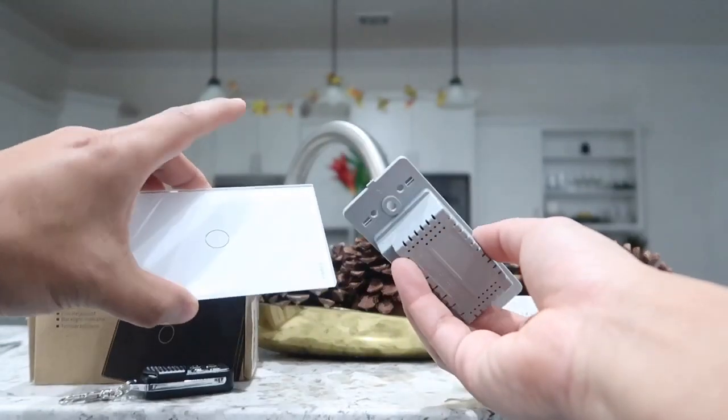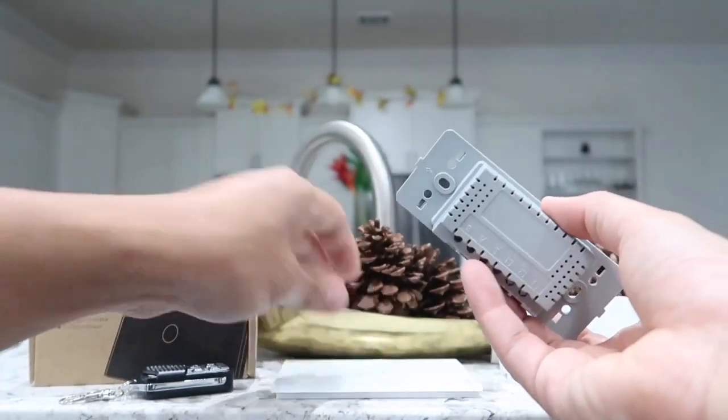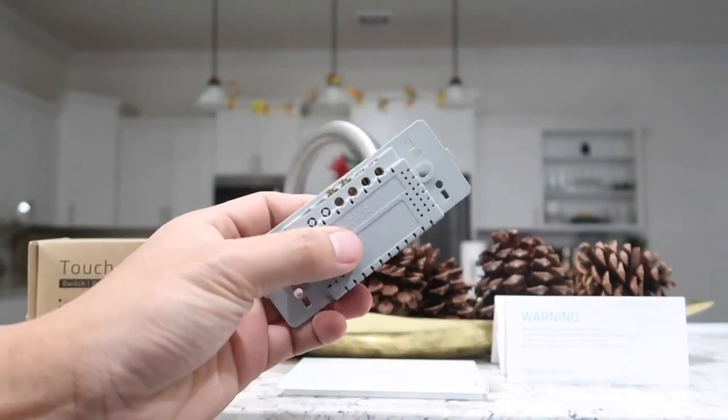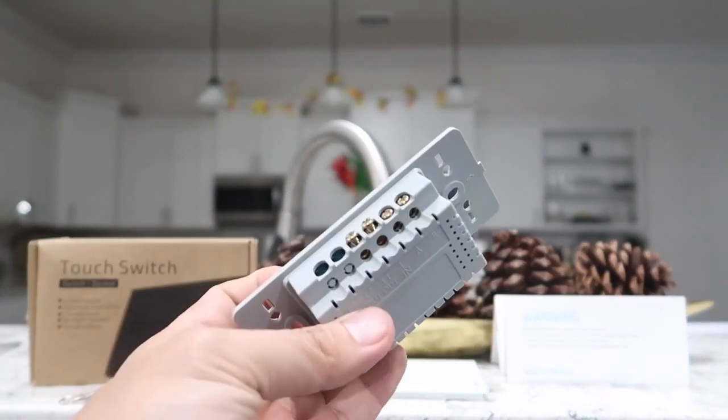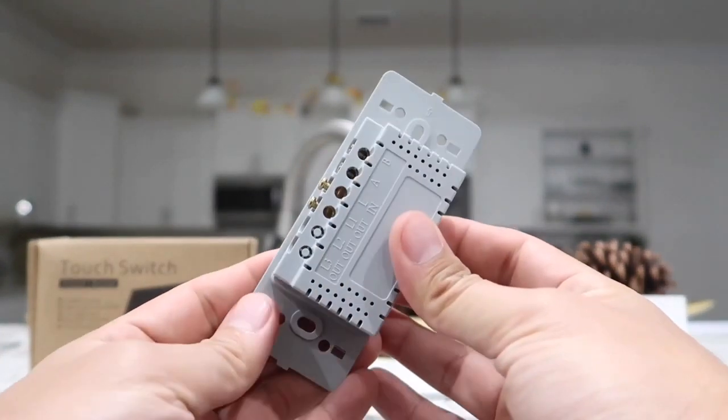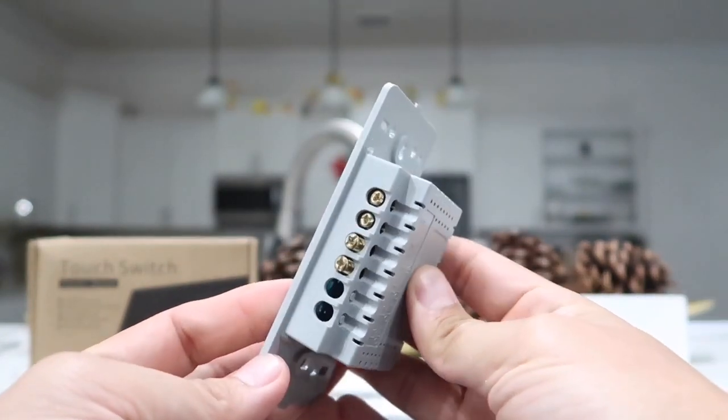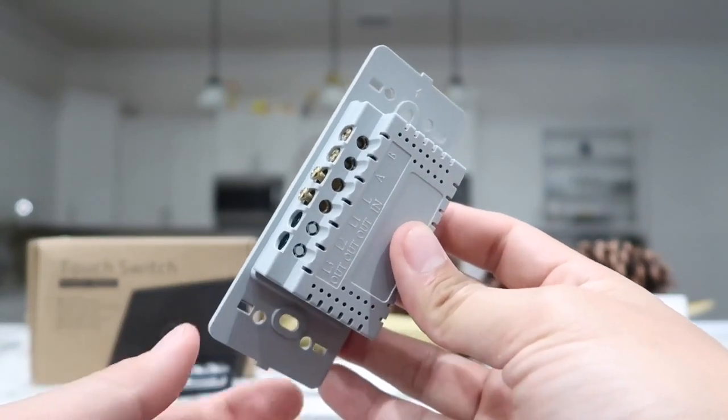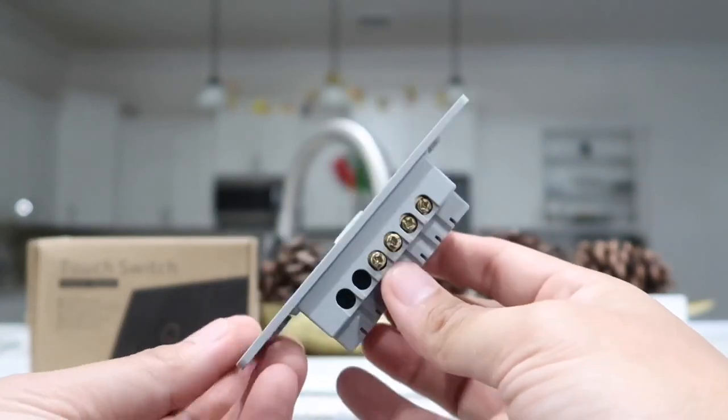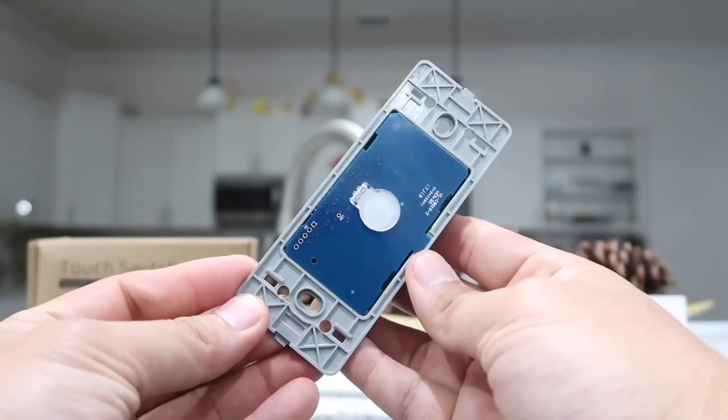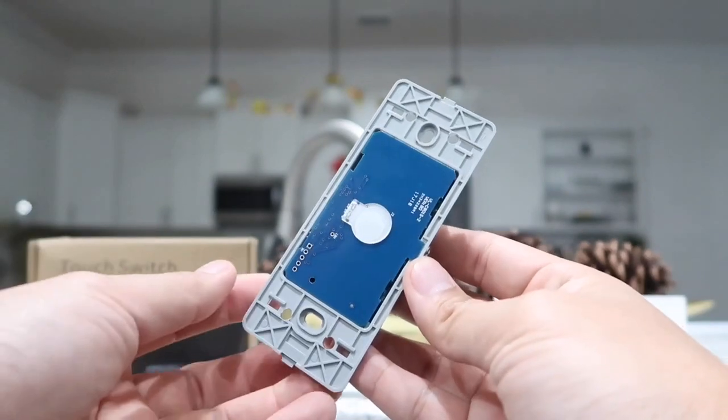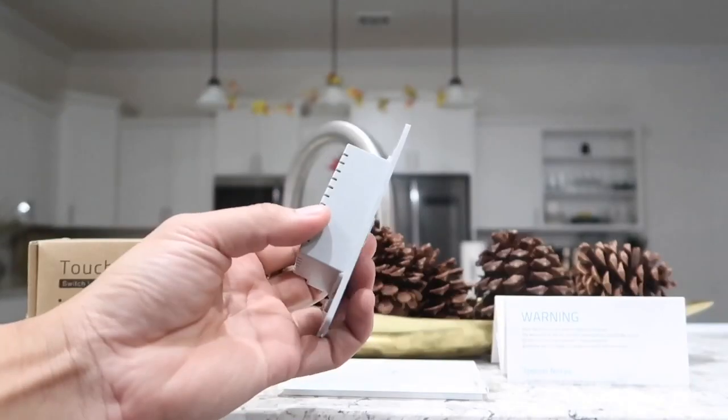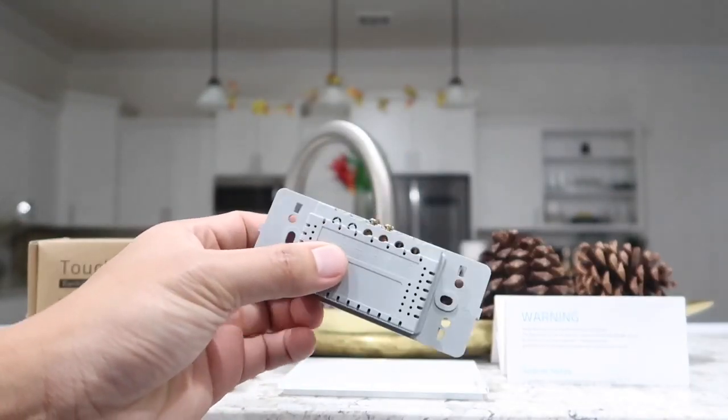But before we do that, let me quickly explain what's on the back of the light switch here. So this may be a little confusing to you if this is your first time installing these type of things, but it is very simple and easy once you understand the mechanics and how it works. So this light switch again is a single pole, one gang, one way light switch. That means we can only use this for one light switch that controls one set of lights. This also means that you cannot use this switch if you have, for example, two light switches in two different locations controlling the same lights. If you need it for that purpose, then you would need to get the two way switch, which is also available as an option.